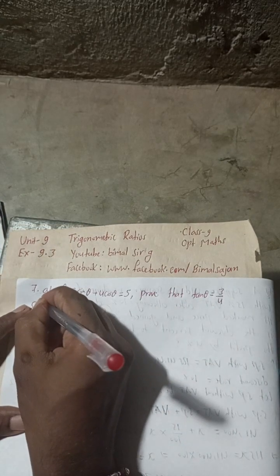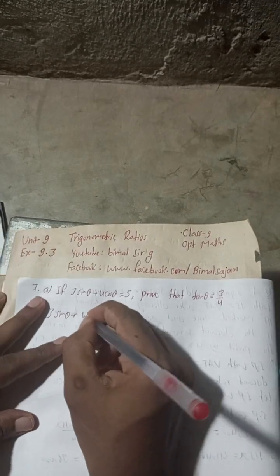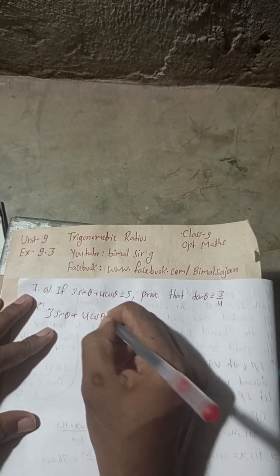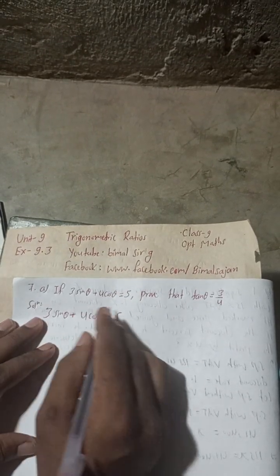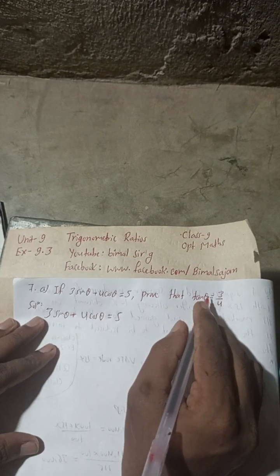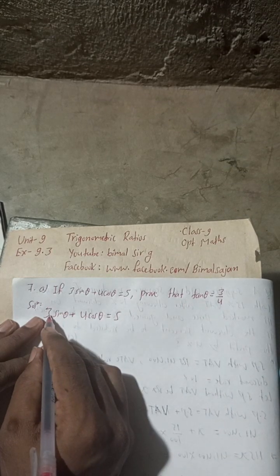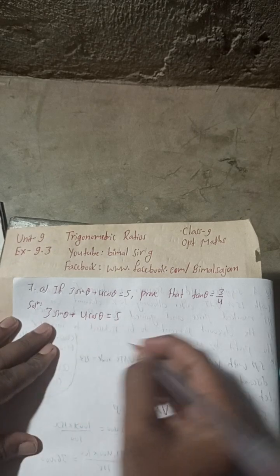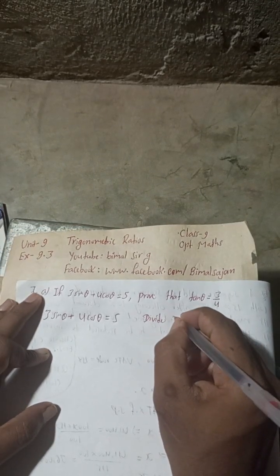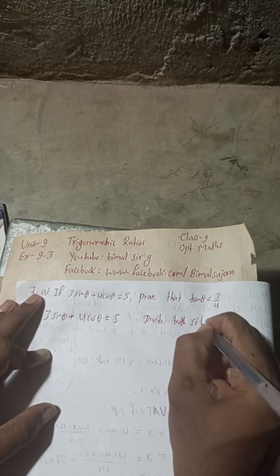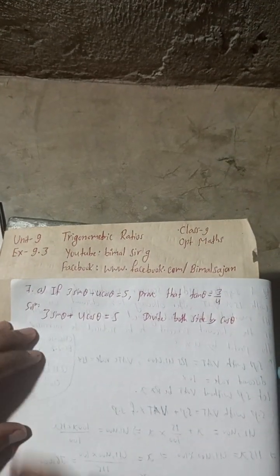We have to prove tan θ, so what we will do is write the solution. Given: 3 sin θ plus 4 cos θ equals 5. We will divide both sides by cos θ, because dividing by cos θ will convert sin θ / cos θ into tan θ.